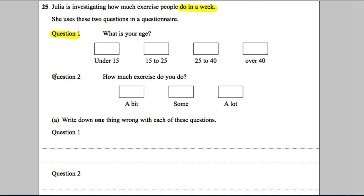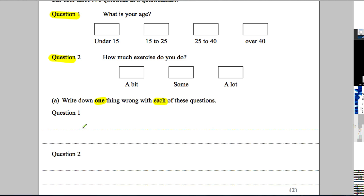Question 1, what's your age? Question 2, how much exercise do you do? Write one thing wrong with each question. So, one thing's got to be wrong with question 1, one thing's got to be wrong with question 2.